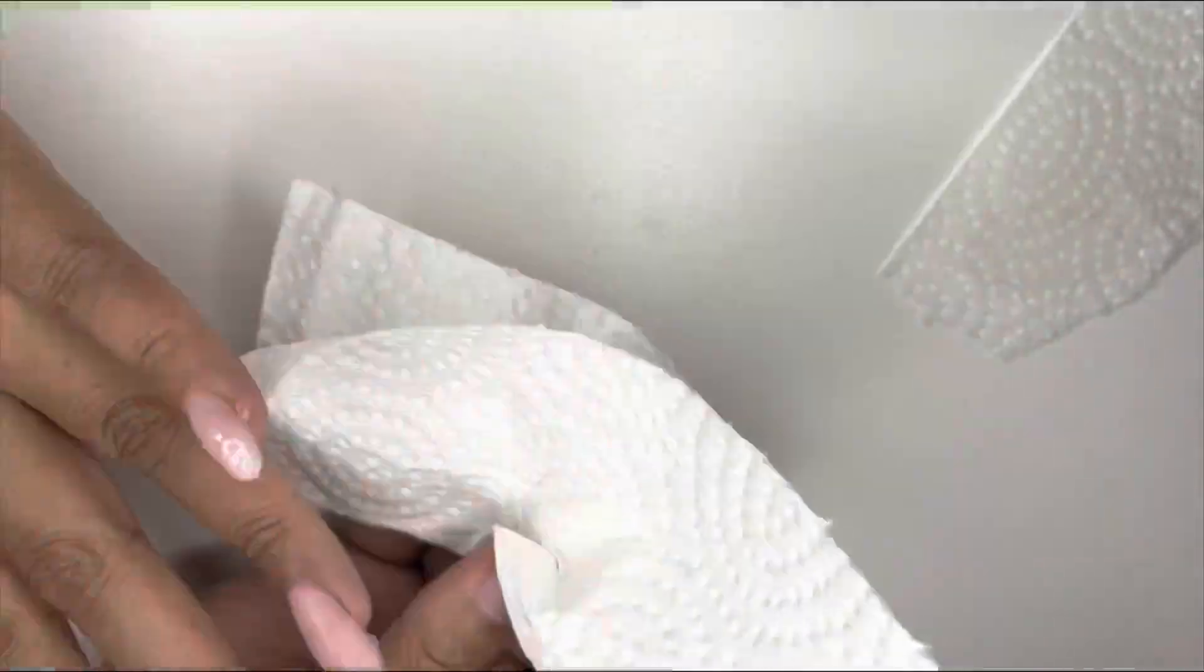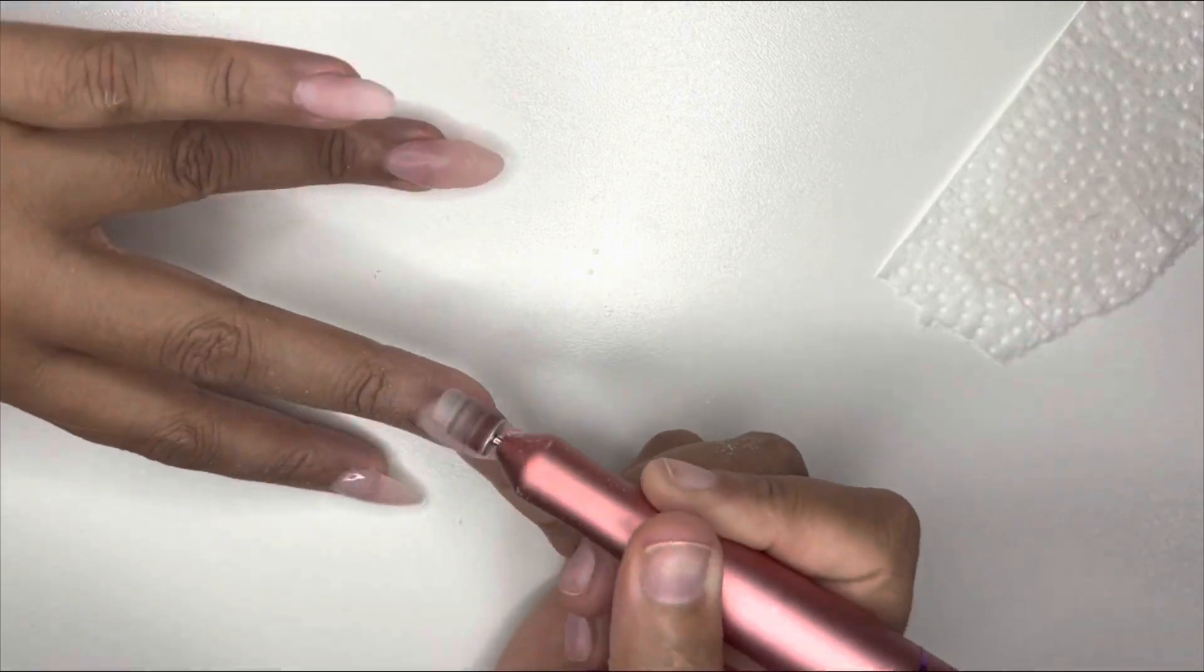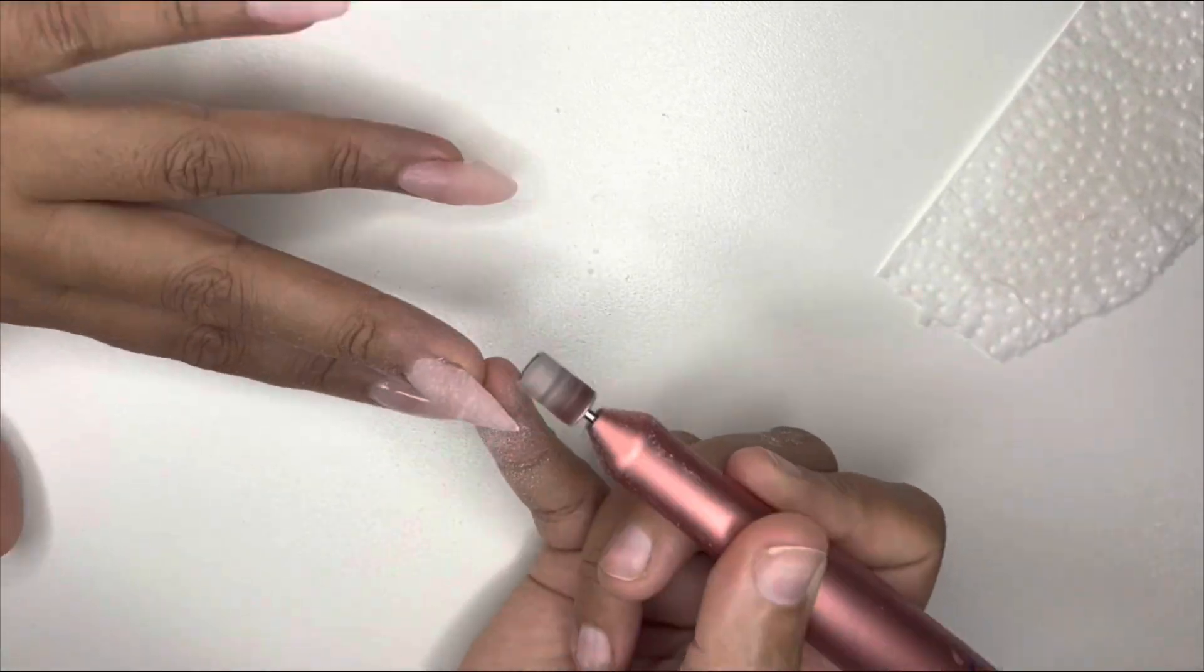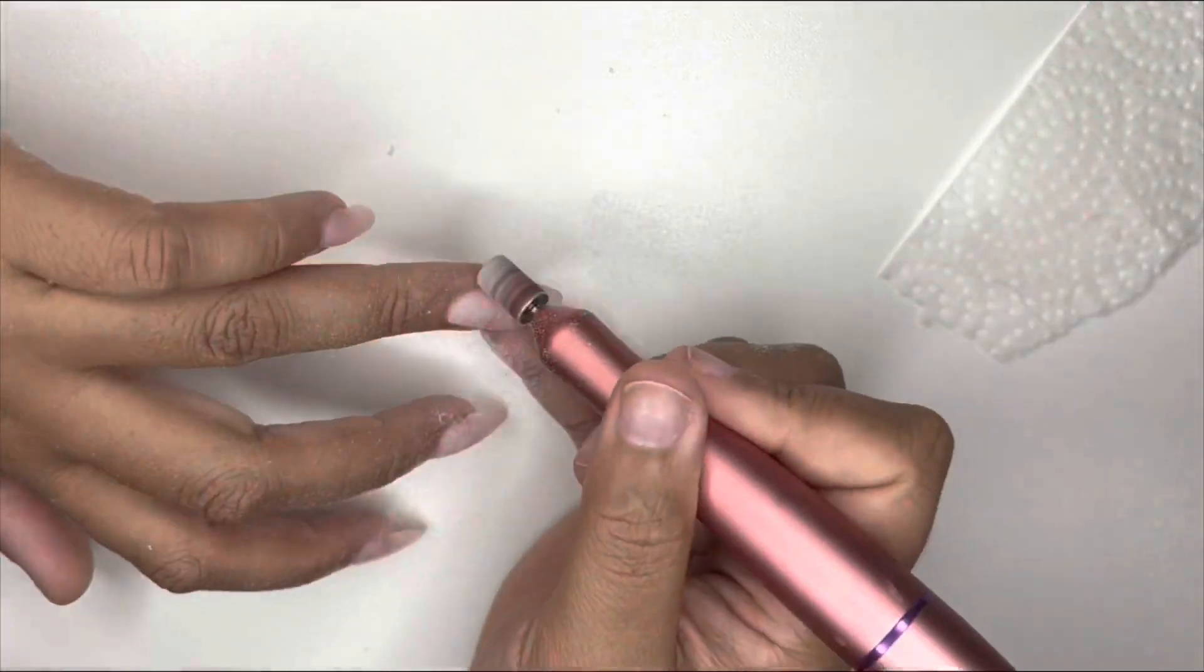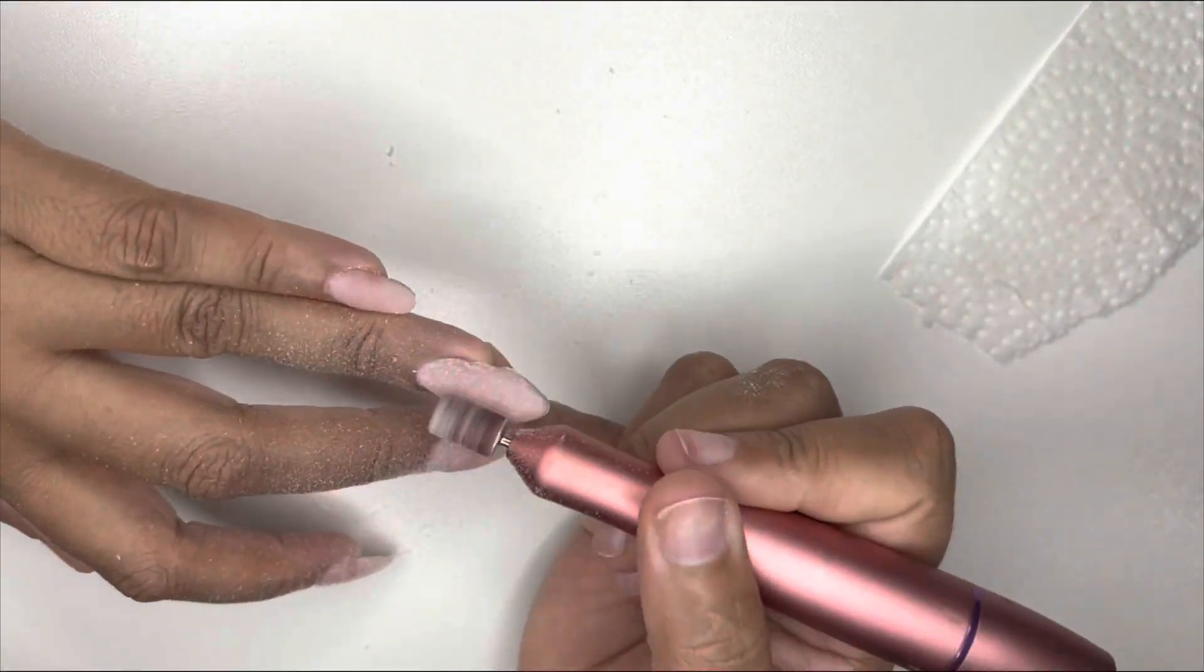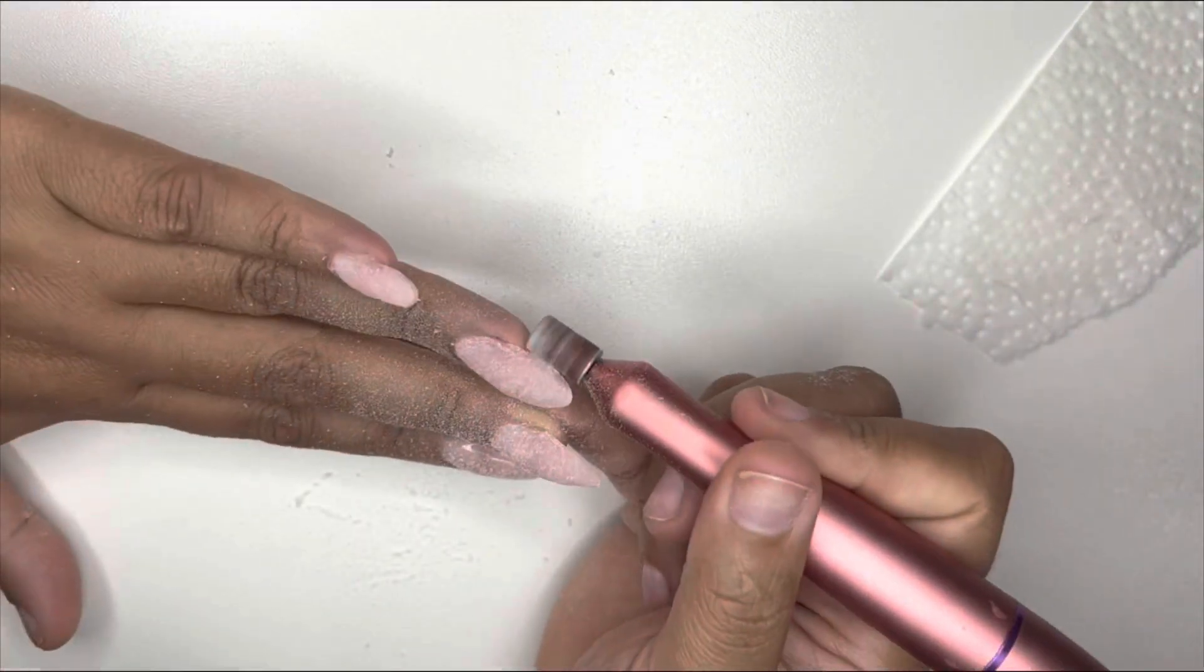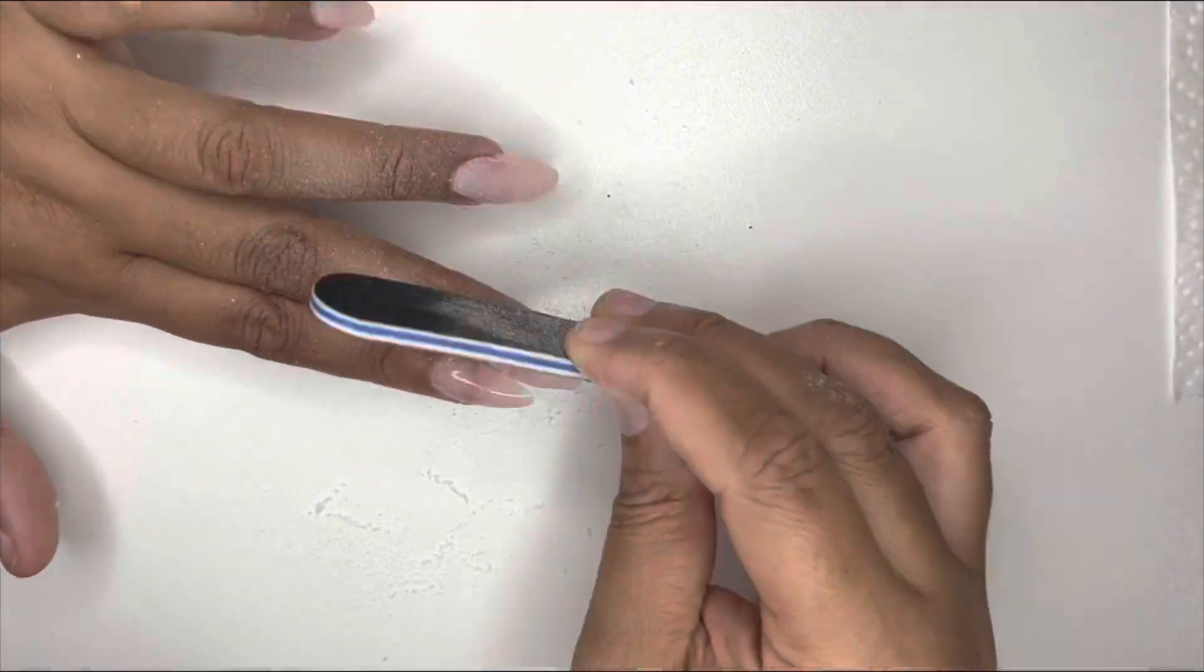Filing it was super easy. Sometimes with poly gels, even if you wipe it off, when you initially start filing it can feel a little bit cakey and gunky. But this wiped off really nice and clean and it was super easy to file using the electrical file and also when I used the handheld file that came with the kit.